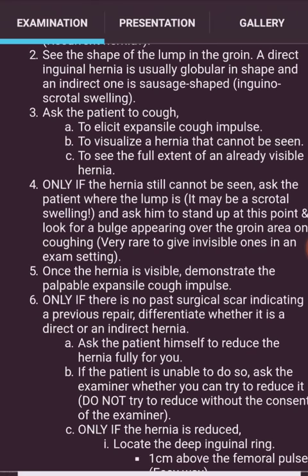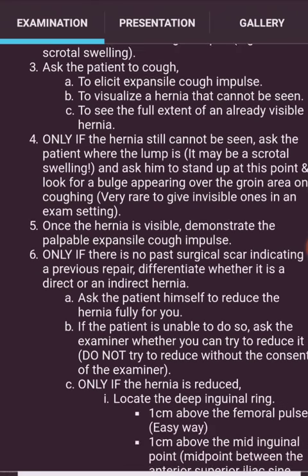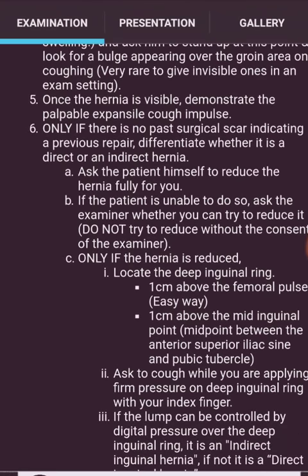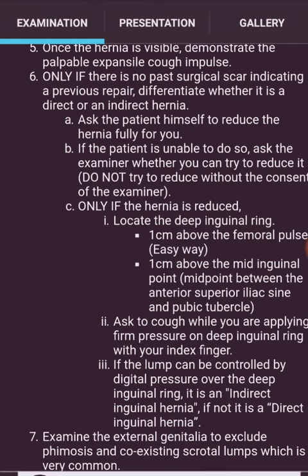Only if there is no past surgical scar indicating a previous repair, differentiate whether the hernia is direct or indirect. Ask the patient to reduce the hernia fully; if unable, ask the examiner for permission to try. Once reduced, locate the deep inguinal ring — one centimeter above the femoral pulse, or one centimeter above the mid-inguinal point.